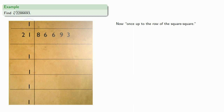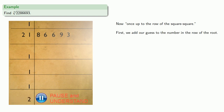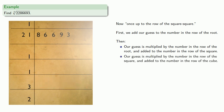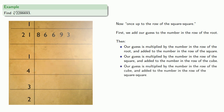So again, we add our guess to the number in the row of the root. Our guess is multiplied by the number in the row of the root and added to the number in the row of the square. Then our guess is multiplied by the number in the row of the square and added to the number in the row of the cube. Then our guess is multiplied by the number in the row of the cube and added to the number in the row of the square square.